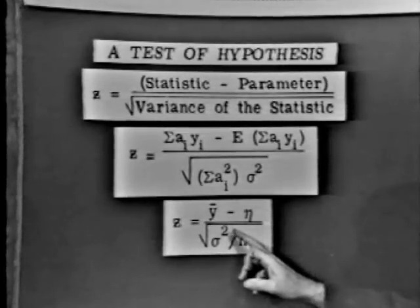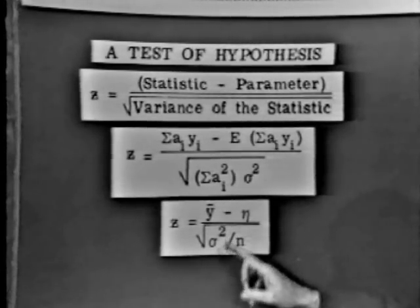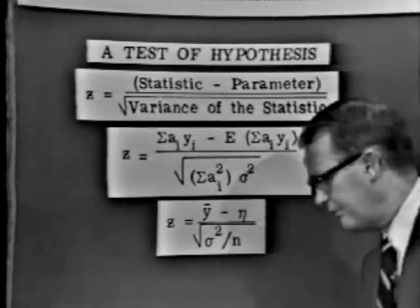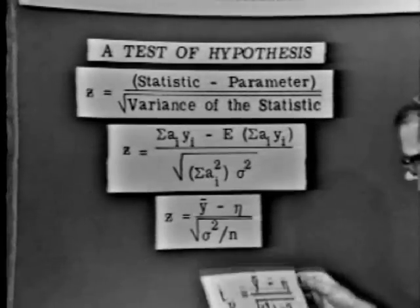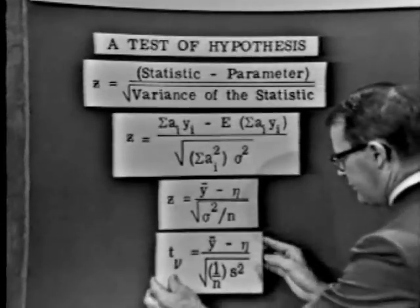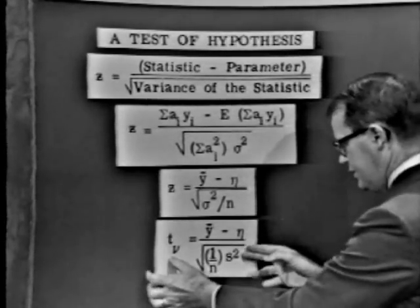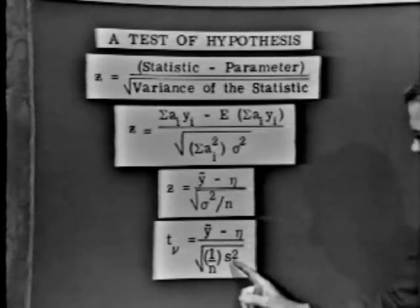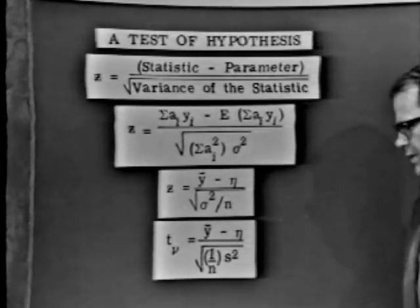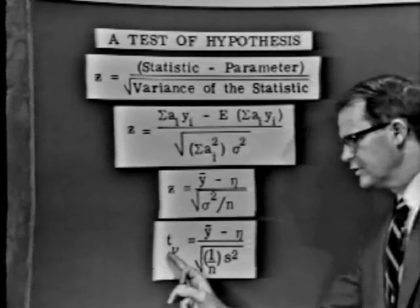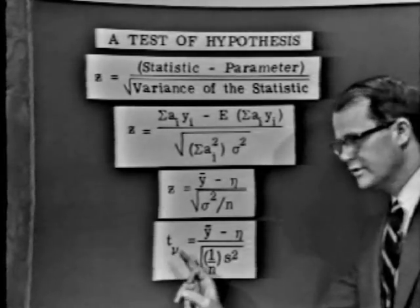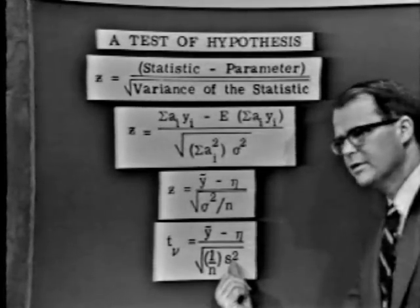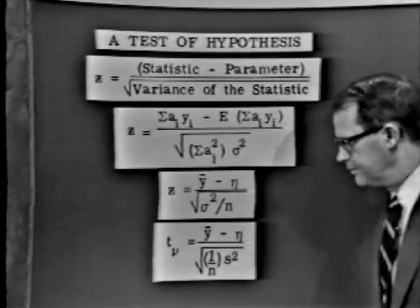In many experimental situations, I won't know what the variance of the observations is, and I'll have to estimate it as well. Under those circumstances, I find myself dealing with the t-deviant, where I replace s squared for sigma squared. Once I do that, z turns into Student's t statistic with nu degrees of freedom, the nu being based on the number of degrees of freedom in that estimate of the variance.